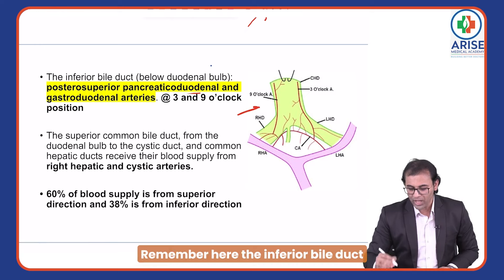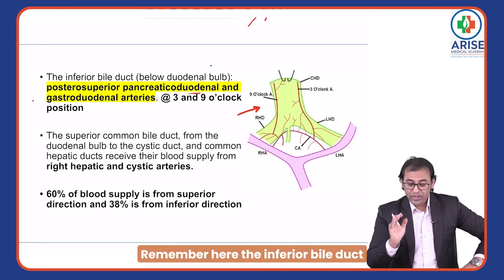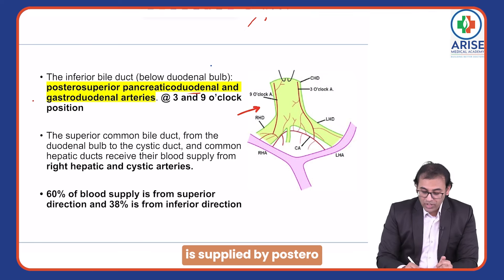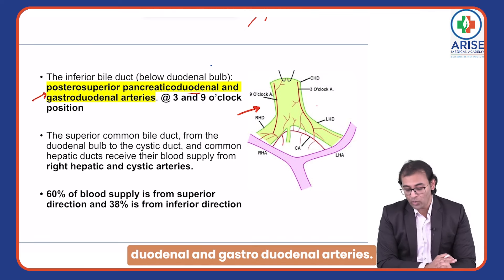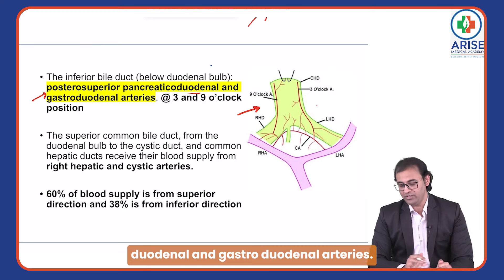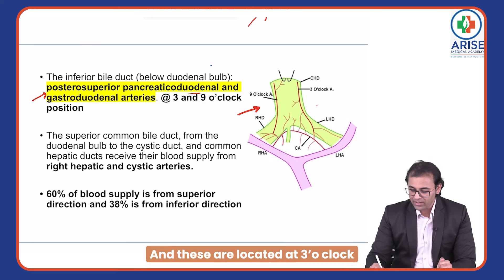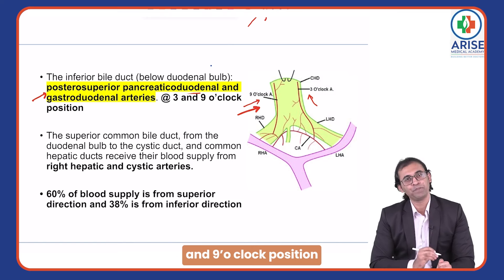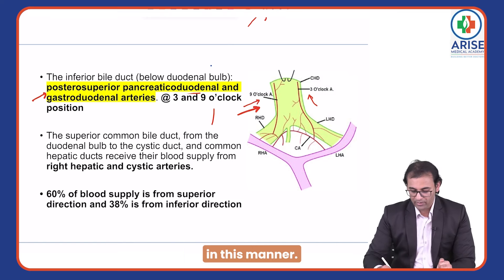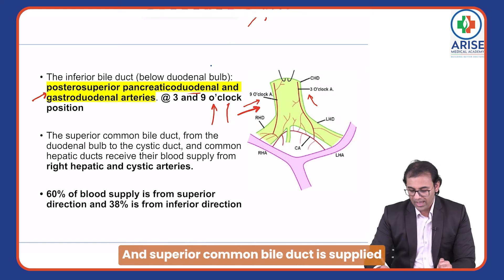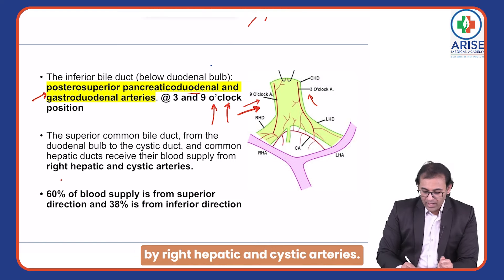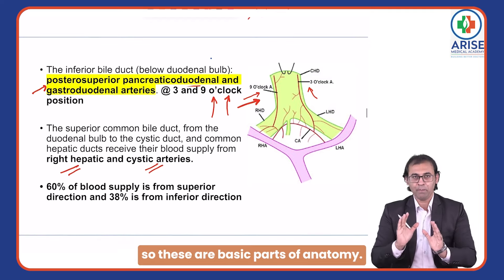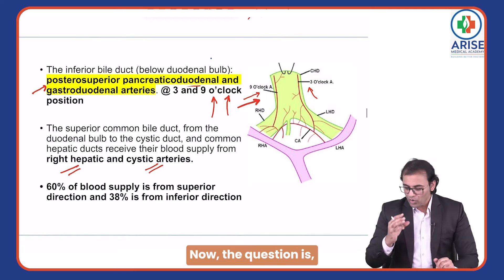The inferior bile duct is supplied by the posterior superior pancreaticoduodenal and gastroduodenal arteries, located at the three o'clock and nine o'clock positions. The superior common bile duct is supplied by the right hepatic and cystic arteries. These are the basic parts of the anatomy you need to know.